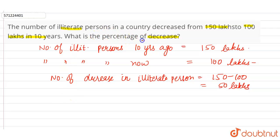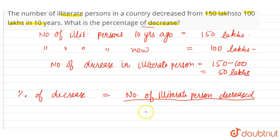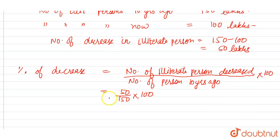Now we have to calculate the percentage of decrease. Percentage of decrease is equal to the number of illiterate persons decreased in these 10 years, divided by the number of illiterate persons 10 years ago, multiplied by 100. So it is 50 divided by 150, into 100.